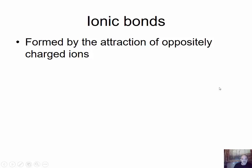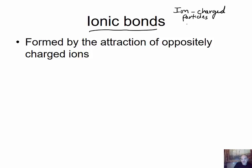We're going to start with ionic bonds. An ionic bond is formed by the attraction of oppositely charged ions. An ion is a charged atom or group of atoms — charged particles. There are two kinds: cations, which are positively charged, and anions, which are negatively charged. It would be good to be familiar with those terms in case you see them in questions.